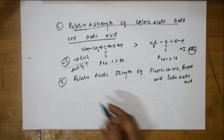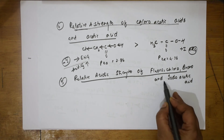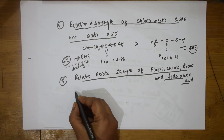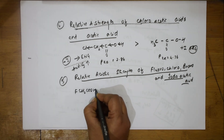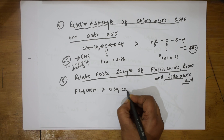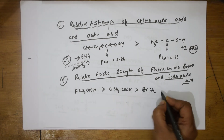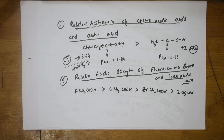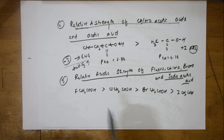Finally, the relative acidic strength of haloacetic acids — fluoroacetic, chloroacetic, bromoacetic, and iodoacetic acids — is determined by electronegativity. Since fluorine is the most electronegative, it has the strongest minus I effect and makes fluoroacetic acid the strongest acid. The order is: fluoroacetic acid > chloroacetic acid > bromoacetic acid > iodoacetic acid. The inductive effect also decreases with distance, which is another factor to consider.